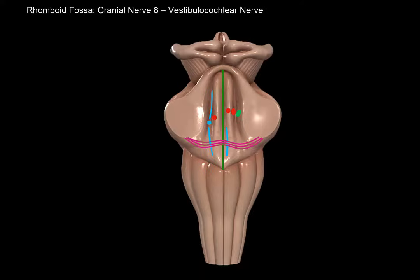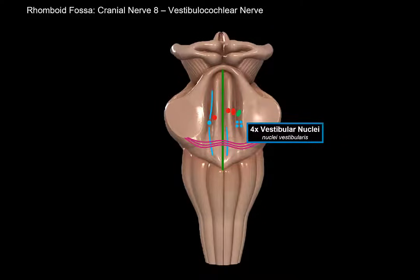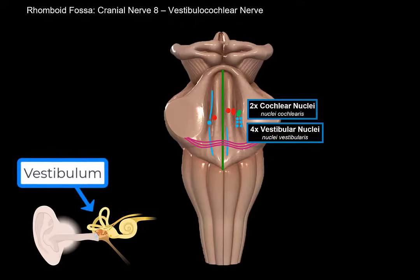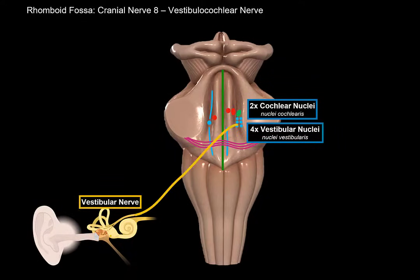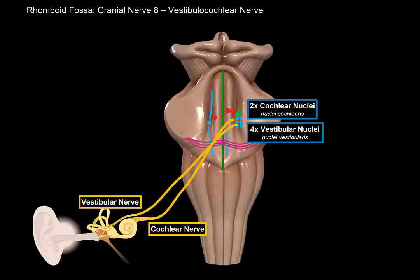Next is cranial nerve 8, the vestibulocochlear nerve, which consists of the vestibular nerve and the cochlear nerve. There are four sensory nuclei for the vestibular part: the medial, lateral, superior, and inferior vestibular nuclei. There are two cochlear nuclei: medial and lateral. The inner ear consists of two parts — the vestibulum for balance, and the cochlea for hearing. The vestibular nerve transmits information about balance, motion, and acceleration. Inside the semicircular canals, crystals detect movement that stimulate the vestibular nerve receptors. The cochlear nerve transmits sound impulses from the organ of Corti via movements of the endolymph to the medial and lateral cochlear nuclei.